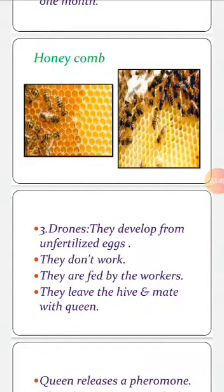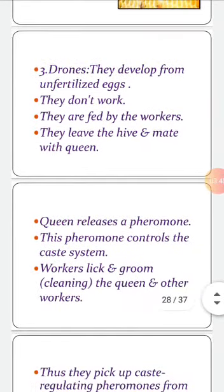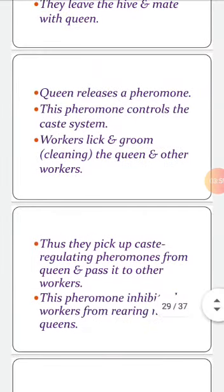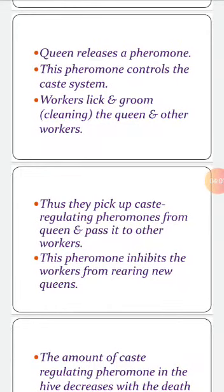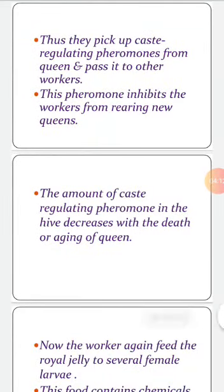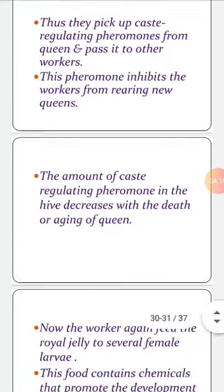Third are drones. They develop from unfertilized eggs. They do not work; they are fed by the workers. They leave the hive and mate with the queen. The queen releases a chemical pheromone that controls the caste system. Workers lick and groom — that is, clean — the queen and other workers. They pick up caste-regulating pheromones from the queen and pass this pheromone to other workers. This pheromone inhibits or stops the workers from rearing new queens.